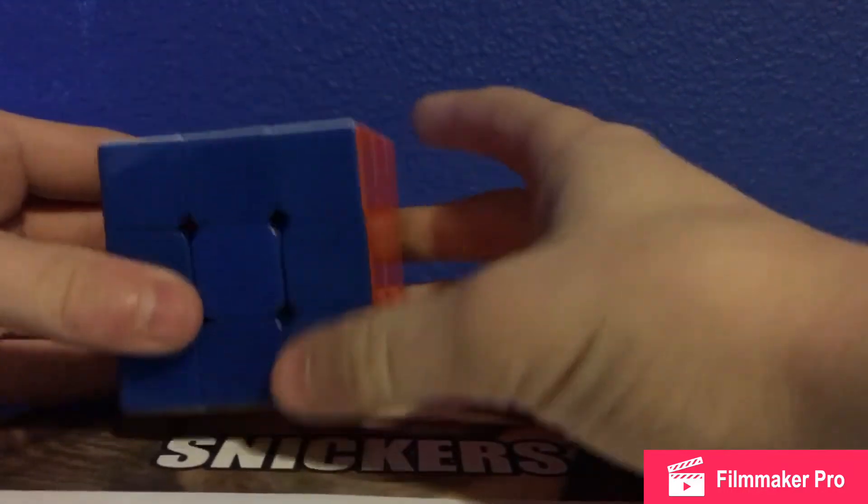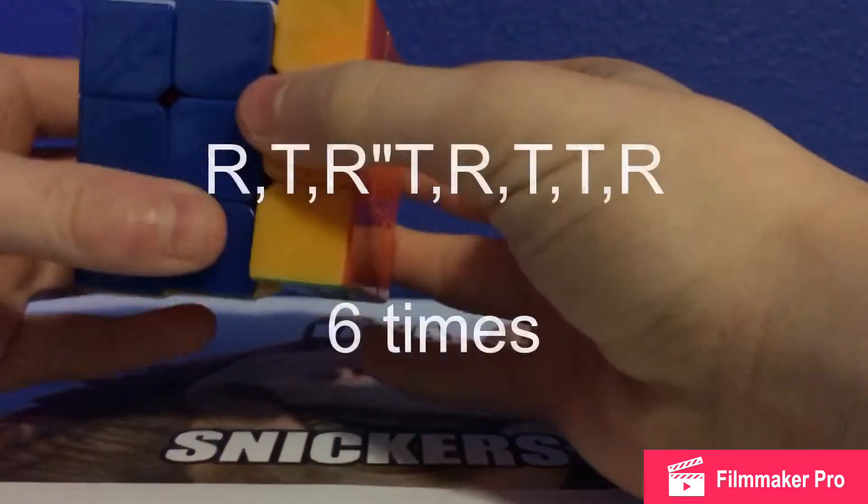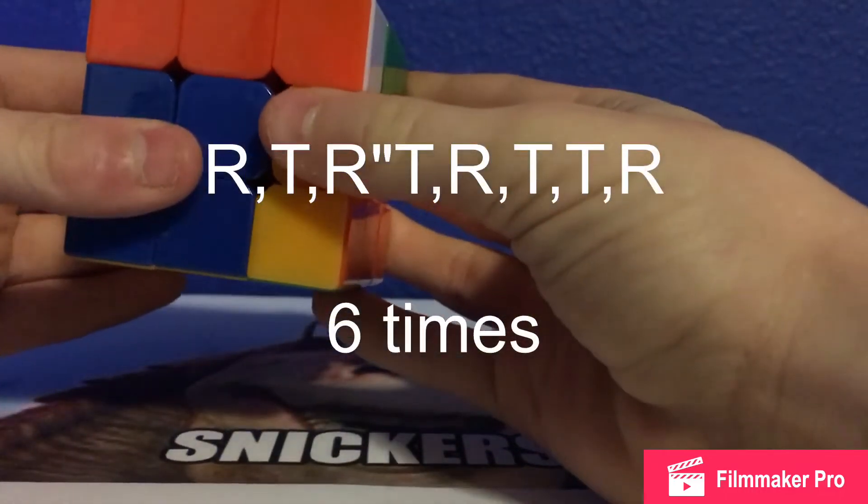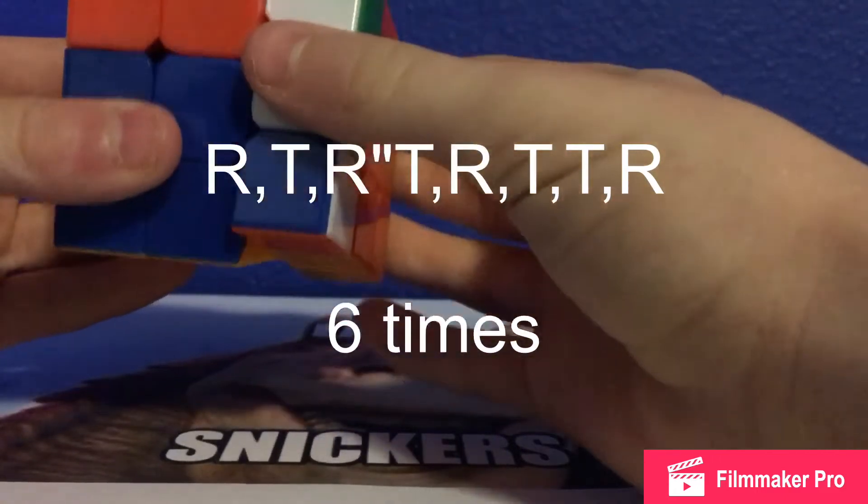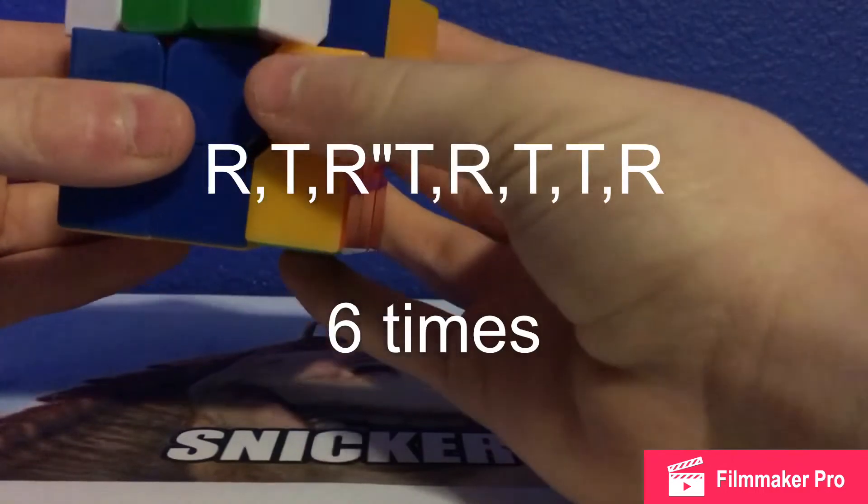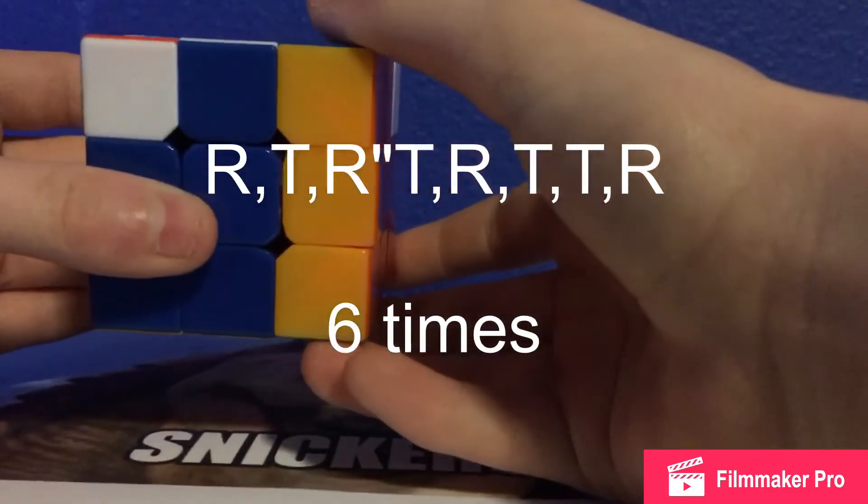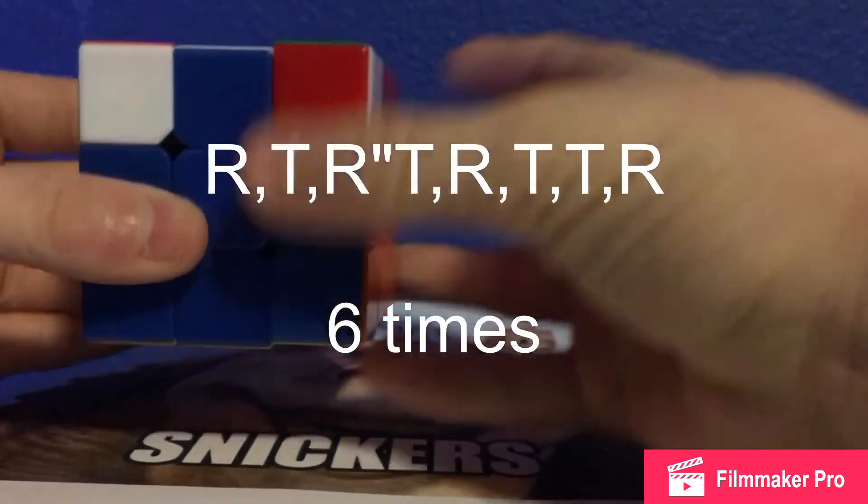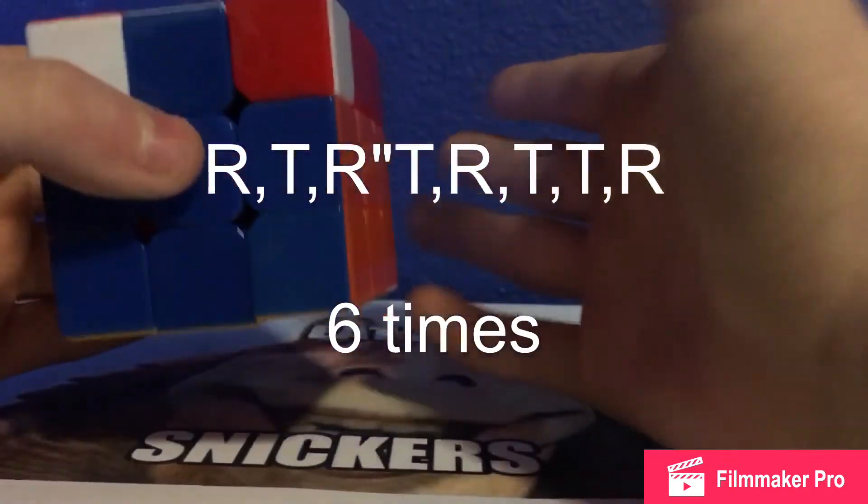So the algorithm is going to be: right clockwise, top clockwise, right counterclockwise, top clockwise, right clockwise, top clockwise, and another top clockwise, and then right counterclockwise. We're going to do that one more time, I mean five more times.